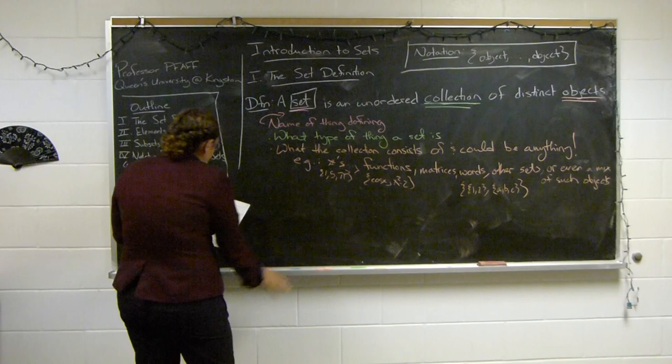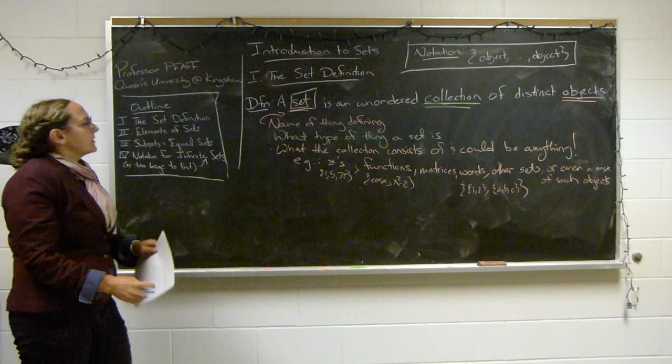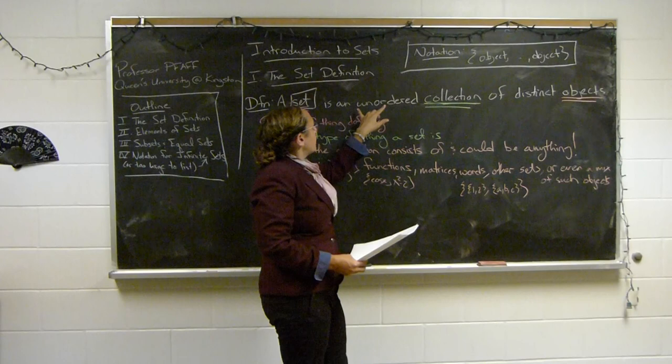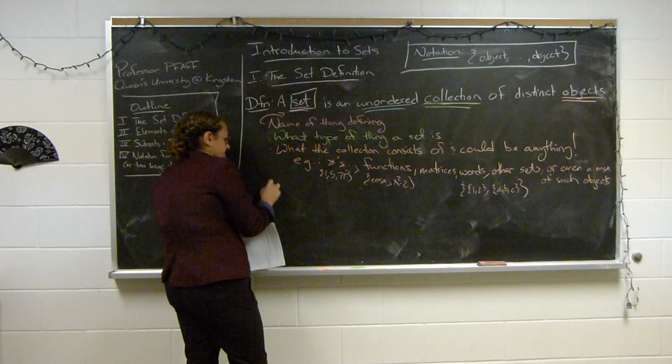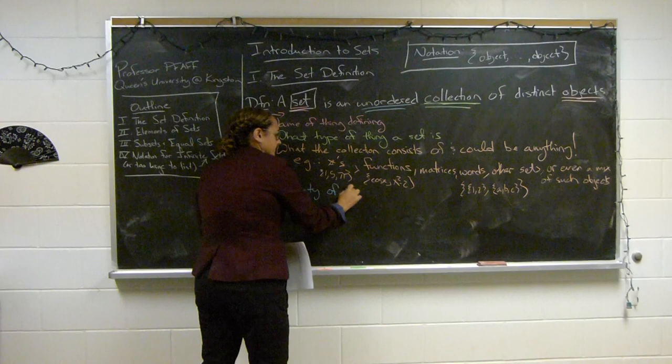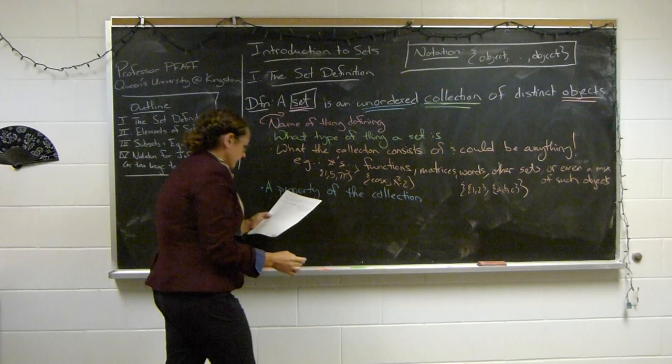Now let's break apart the rest of the definition. We know this is a collection, and we know what it consists of — objects. We know that the collection is unordered and the objects are distinct. Let's focus in on 'unordered': a property of the collection is that the order objects are listed in doesn't matter.